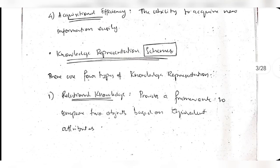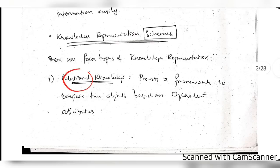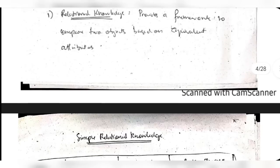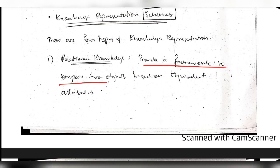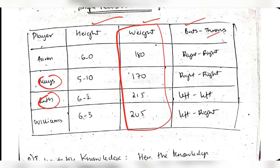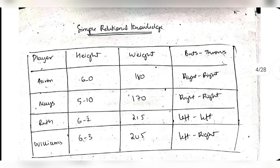There are four types of knowledge representation schemes. The first is simple relational knowledge - like rows and columns in a table with values assigned to each column. It provides a framework to compare two objects based on equivalent attributes. For example, comparing two players on height, weight, or throwing ability by selecting one attribute and comparing.